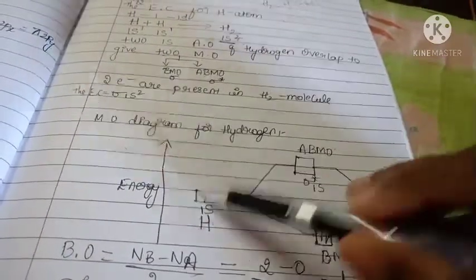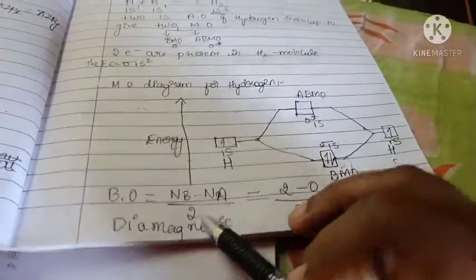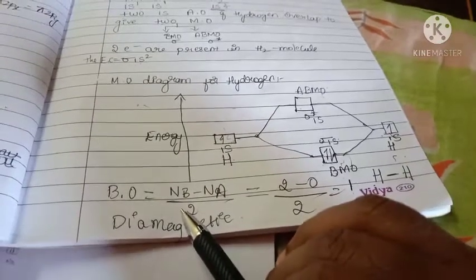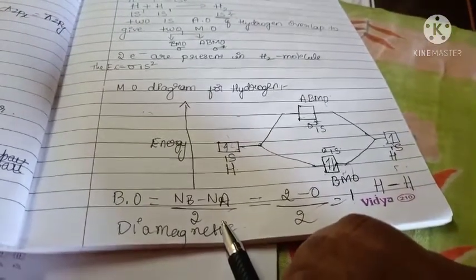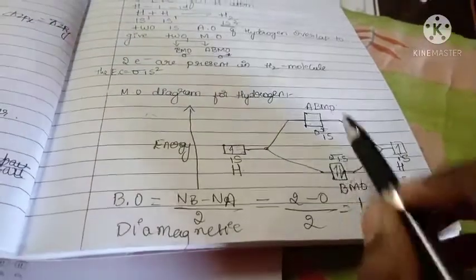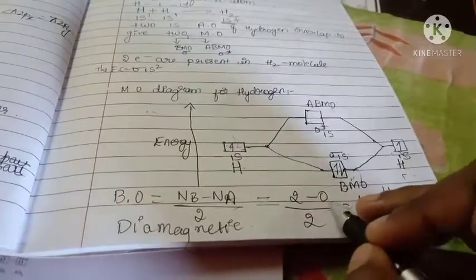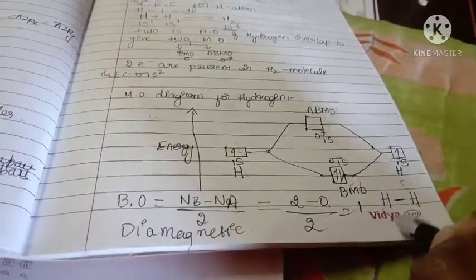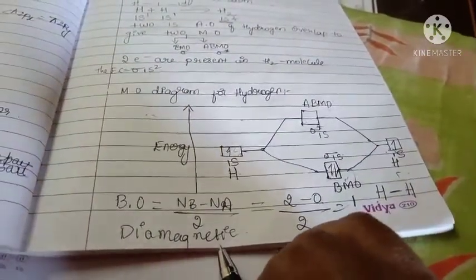Here, on the sides we are writing atomic orbitals and this is the molecular orbital. The bond order is Nb minus Na divided by 2. Nb means the number of electrons present in bonding orbitals. Na means the number of electrons present in antibonding orbitals divided by 2. There is no electron present in antibonding, so that is 0. Sigma 1s BMO has 2, so the bond order is 1. One covalent bond is formed between the two hydrogen atoms and it is diamagnetic in nature because there are no unpaired electrons.